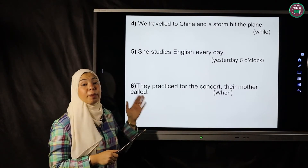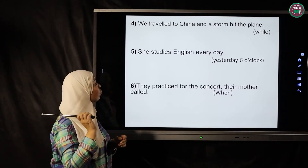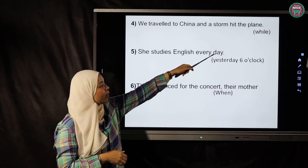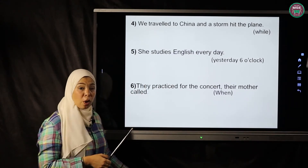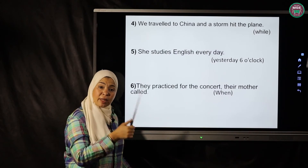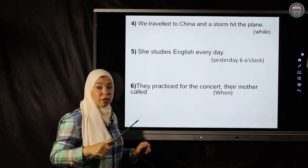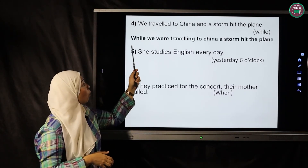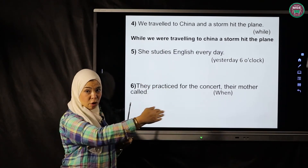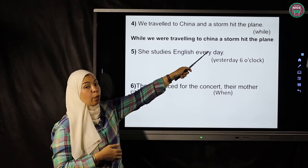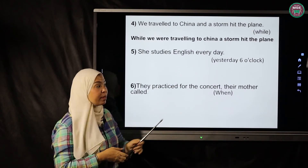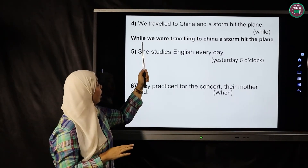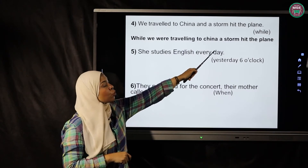Fourth exercise: 'We traveled to China and a storm hit the plane' — rewrite using 'While'. Start with 'While' plus past continuous, then the short interrupting action in past simple. Answer: 'While we were traveling to China, a storm hit the plane.' 'Were traveling' is the long action in past continuous; 'hit' is the short interrupting action in past simple. Note: 'hit' is irregular — past form is also 'hit'.